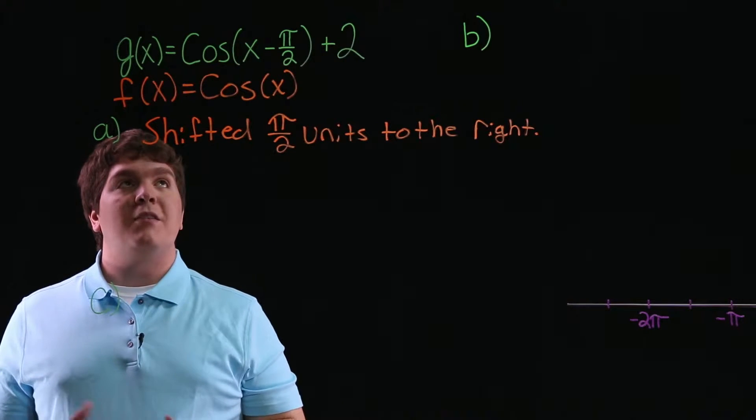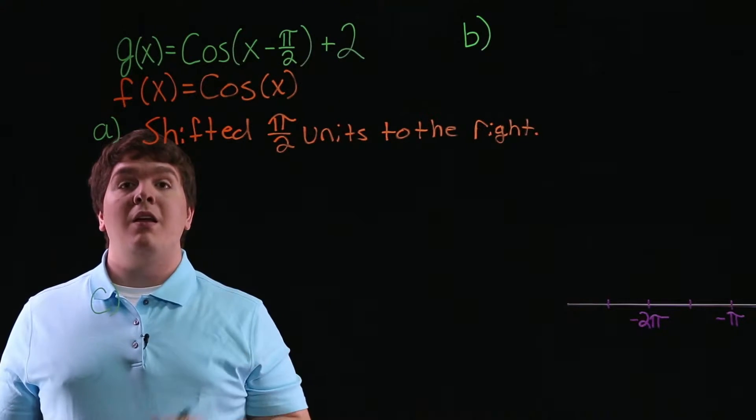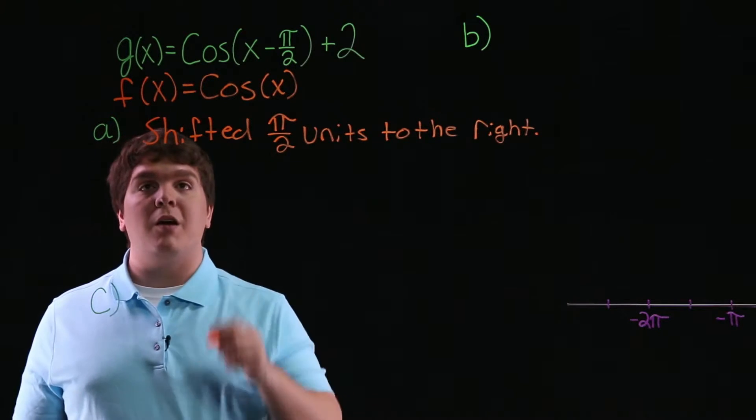And since we have cosine of x minus pi over 2 plus 2, g of x is f of x shifted 2 units up.